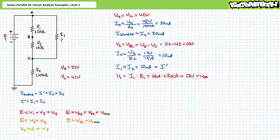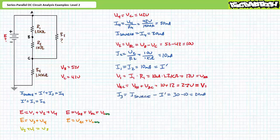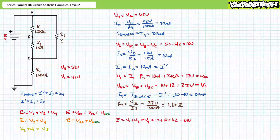V1 is equivalent to double subscript notation VAB. Voltage at A with respect to C equals VAB plus VBC, or V1 plus V2 equals V3. Substituting our calculated values demonstrates that VAC or V3 is 22 volts. We can use an algebraic manipulation of the Kirchhoff's current law equation solving for unknown current I3, where I3 equals source current minus I single prime. Substituting our calculated values demonstrates that I3 is the remaining 20 milliamps. An application of Ohm's law solving for unknown resistor R3 demonstrates that R3 is 1.1 kilo ohms. Finally, applying Kirchhoff's voltage law, E equals V1 plus V2 plus V4, and substituting our calculated values demonstrates that the unknown voltage source is 64 volts.